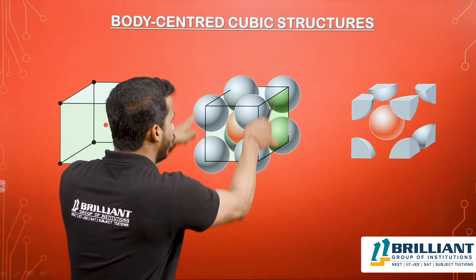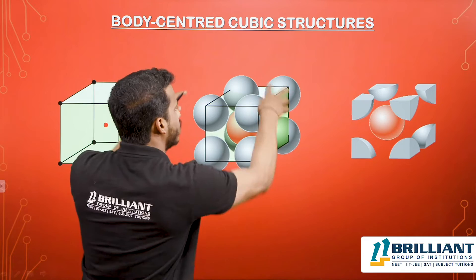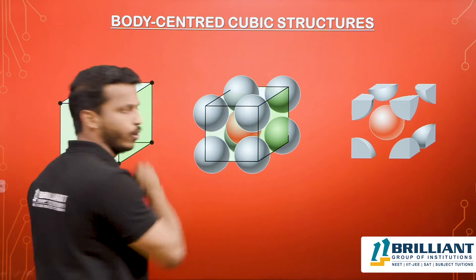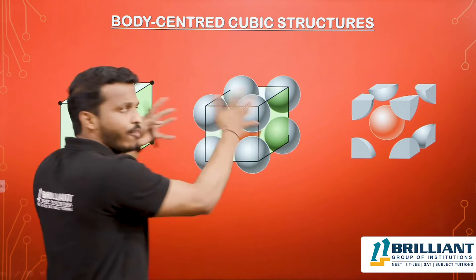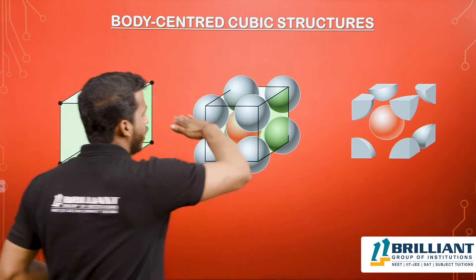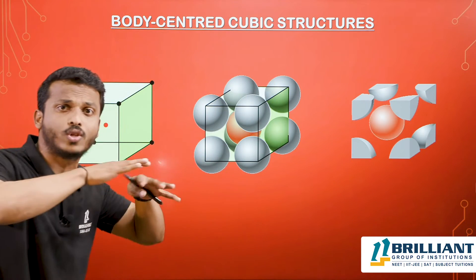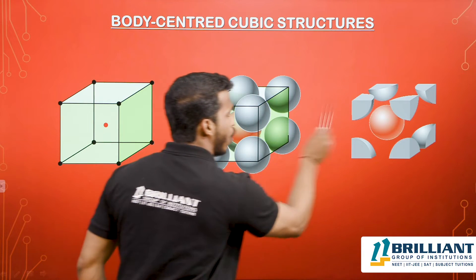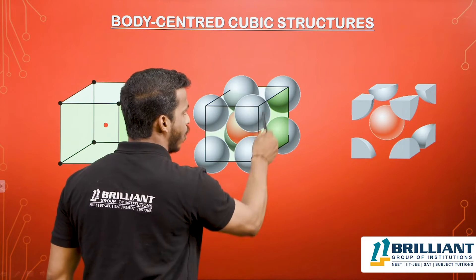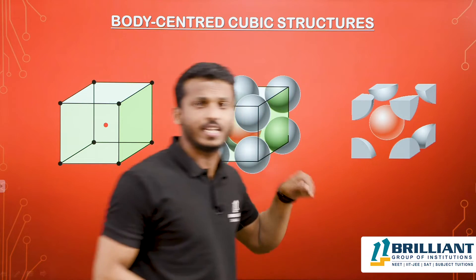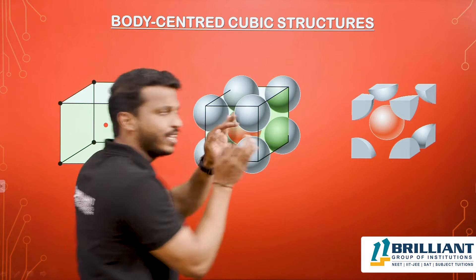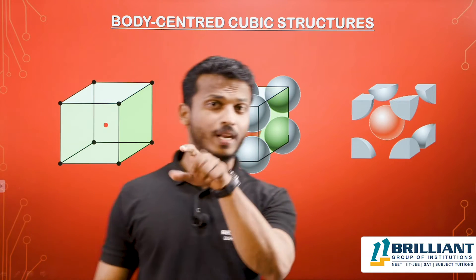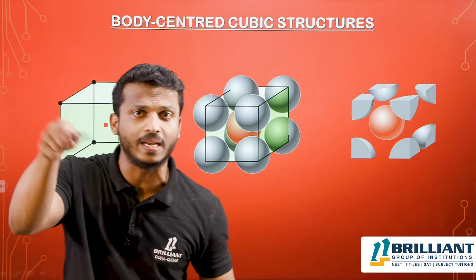If you consider this cube, inside the cube — not the outside portion — how many spheres are there in total? This is one unit cell, and above, below, right, left, top, bottom — everywhere there are unit cells in 3D. When you cut the outer portions, from each corner you get one-eighth portion, because one sphere at a corner is shared by eight unit cells. So from each corner you get one-eighth, and there are eight corners: eight times one-eighth equals one.